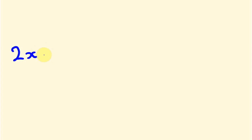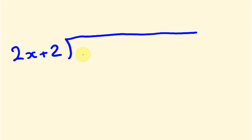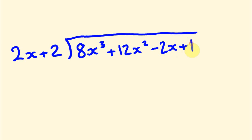So I'm going to launch into the next part right now. We have the problem 2x plus 2, and we're going to be dividing this into 8x cubed plus 12x squared minus 2x plus 1. If you've already seen the previous video, maybe you'll give this a go. You'll notice the difference here is we have this coefficient of 2, and this has to be taken into account.